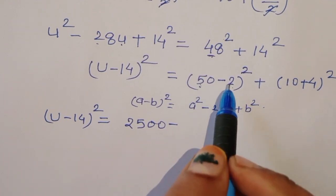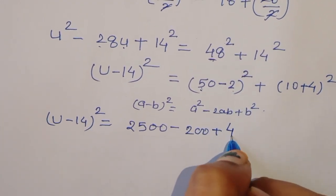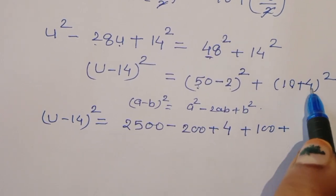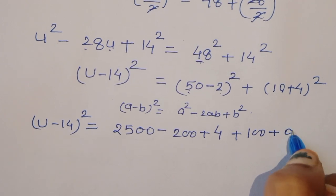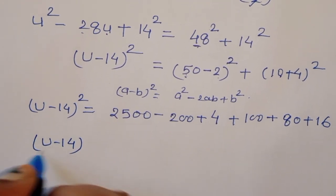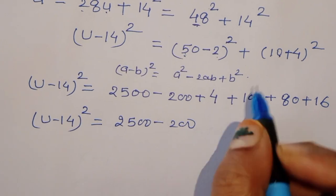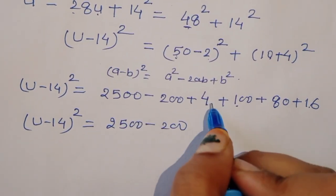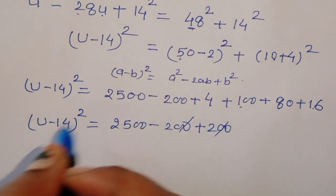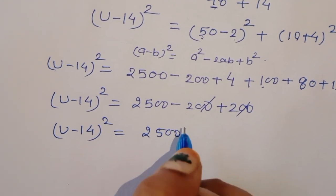Evaluating the right side: 48² + 14² = 2304 + 196 = 2500. So (u - 14)² = 2500.